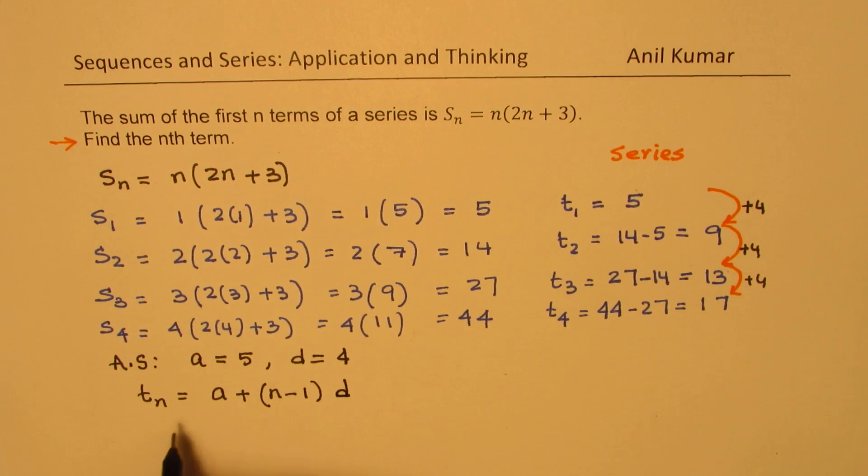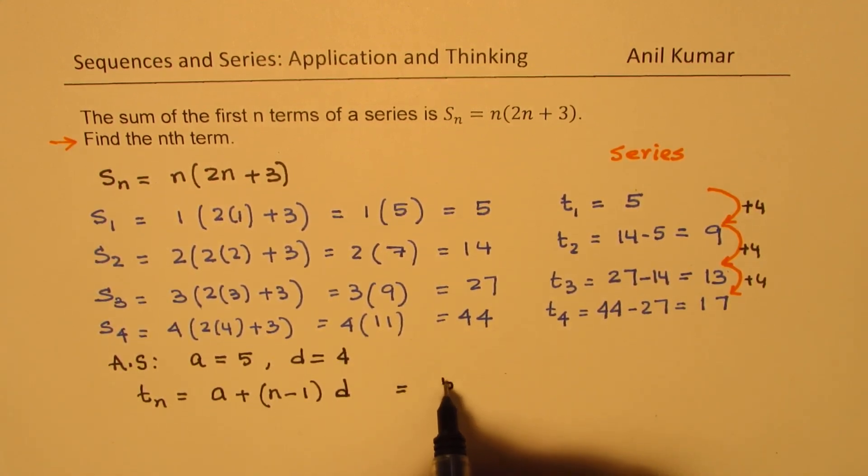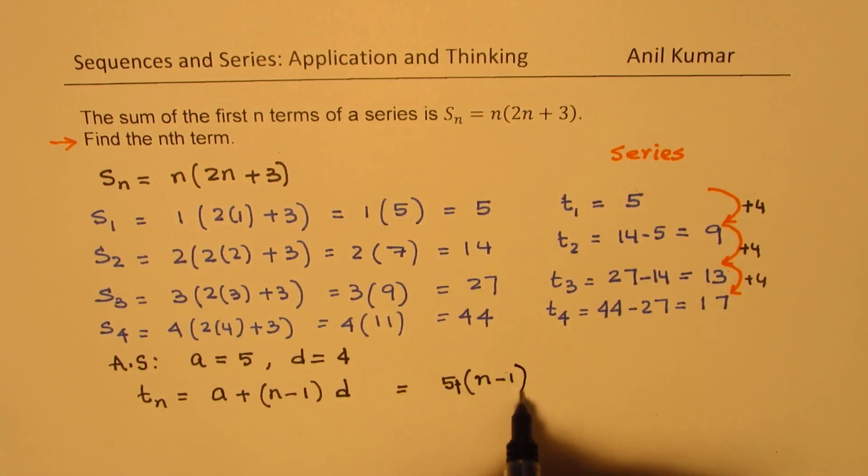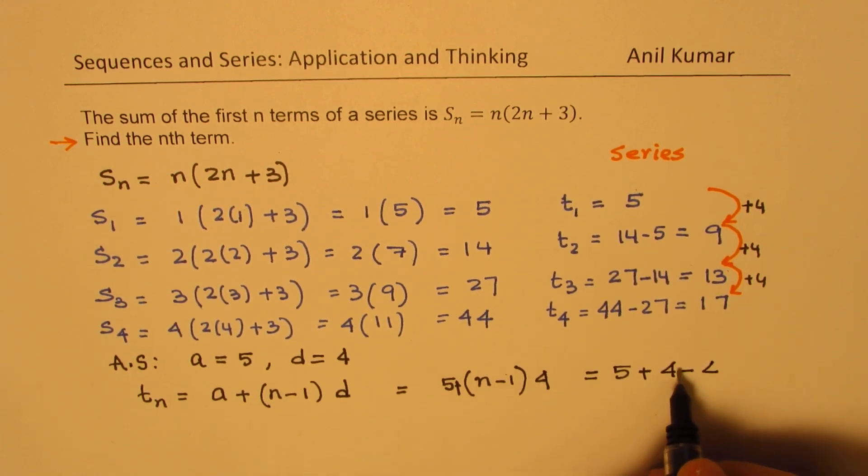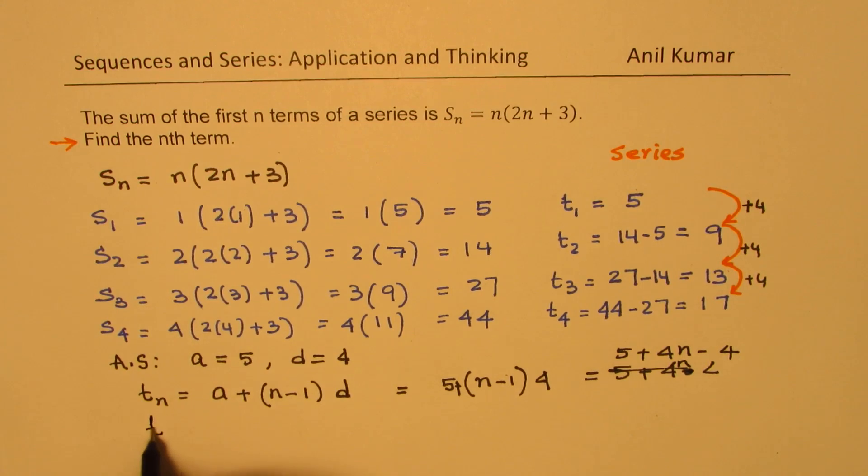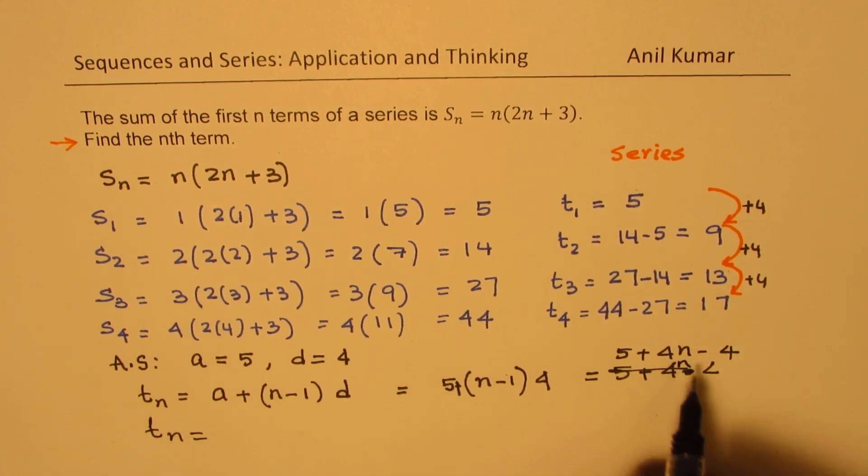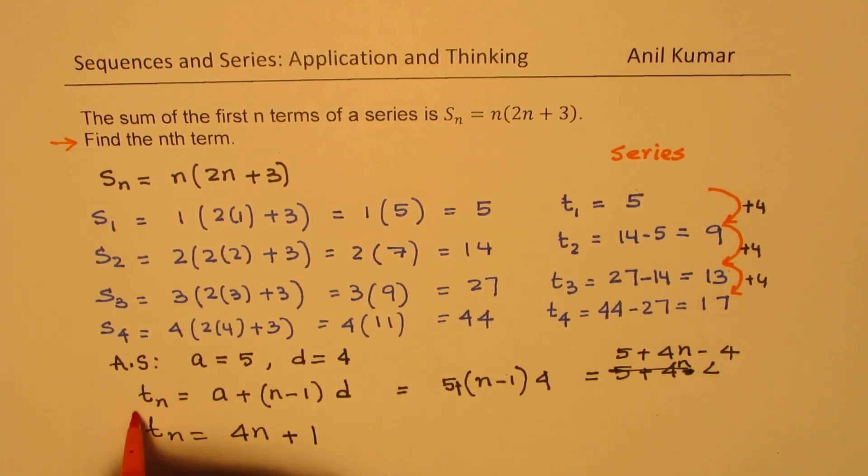So n minus 1 times D. So the nth term will be equal to the first term being 5 plus n minus 1 times common difference being 4. So that is going to be the nth term: 5 plus 4n minus 4. So we can write the nth term as 4n, 5 minus 4 as 1. So that becomes the nth term for us.